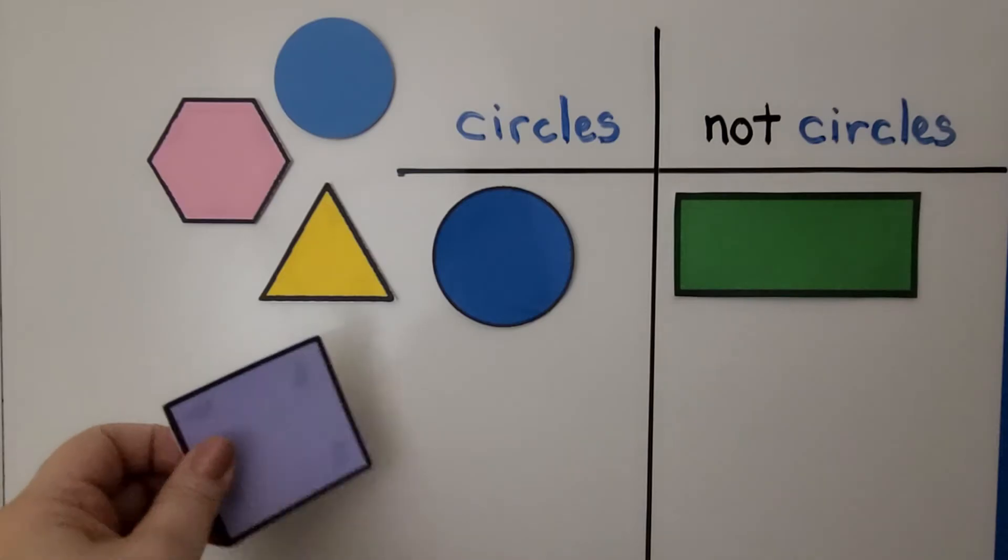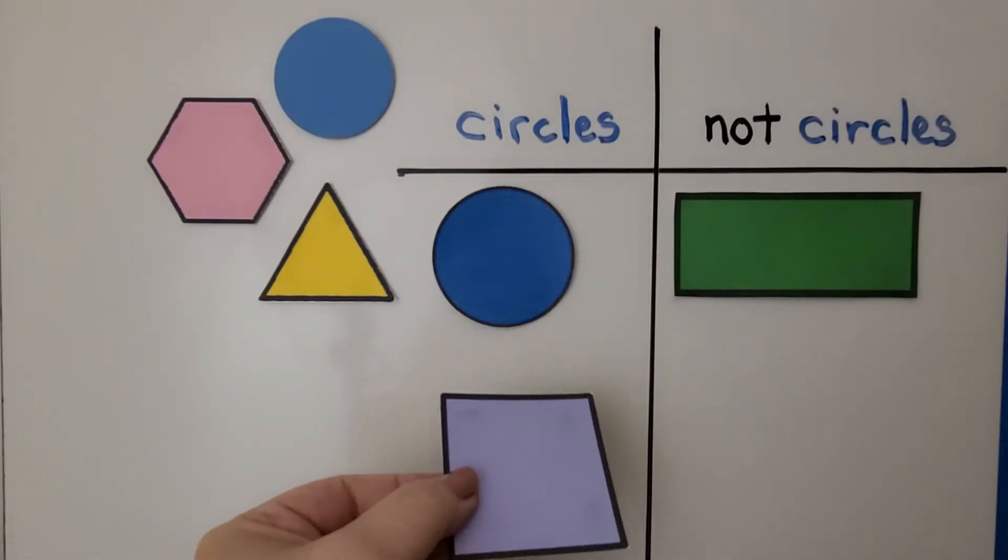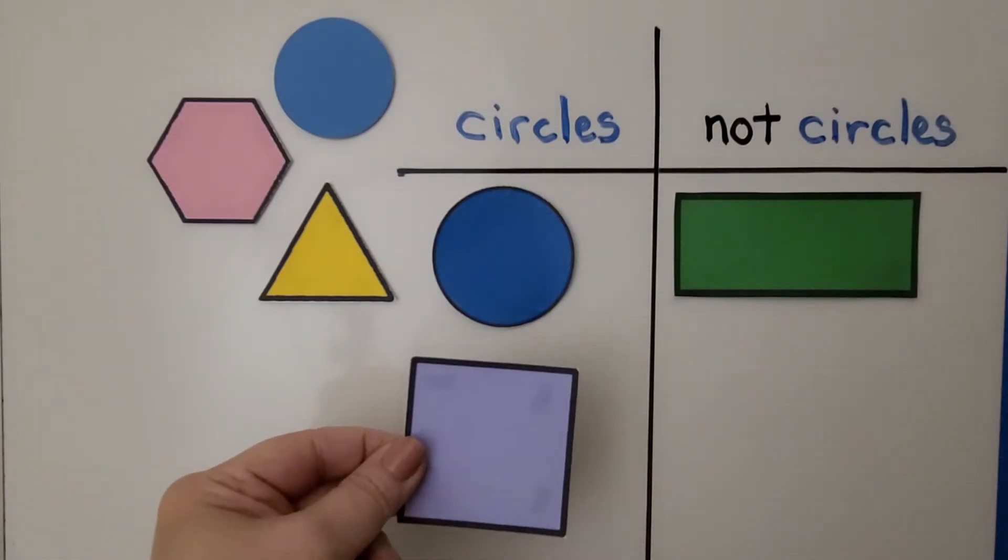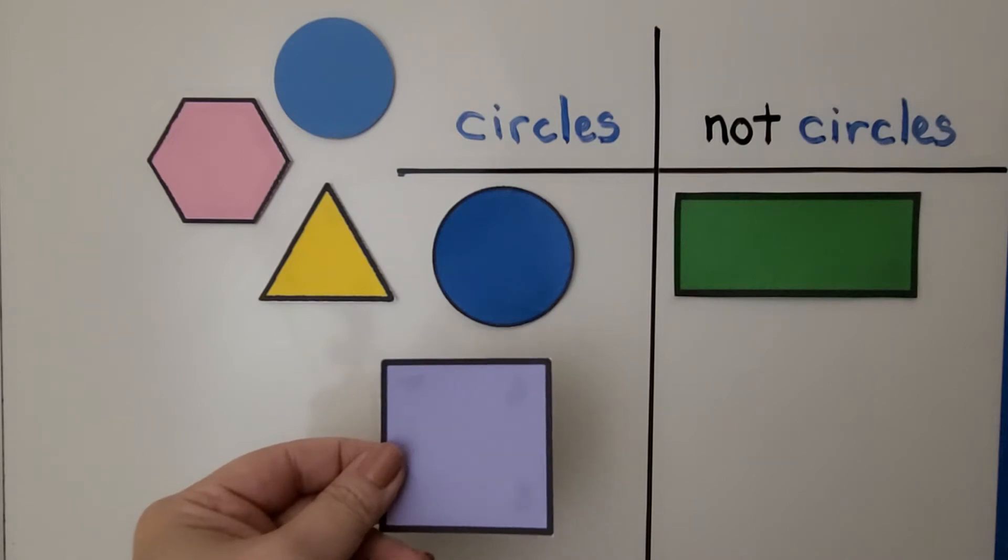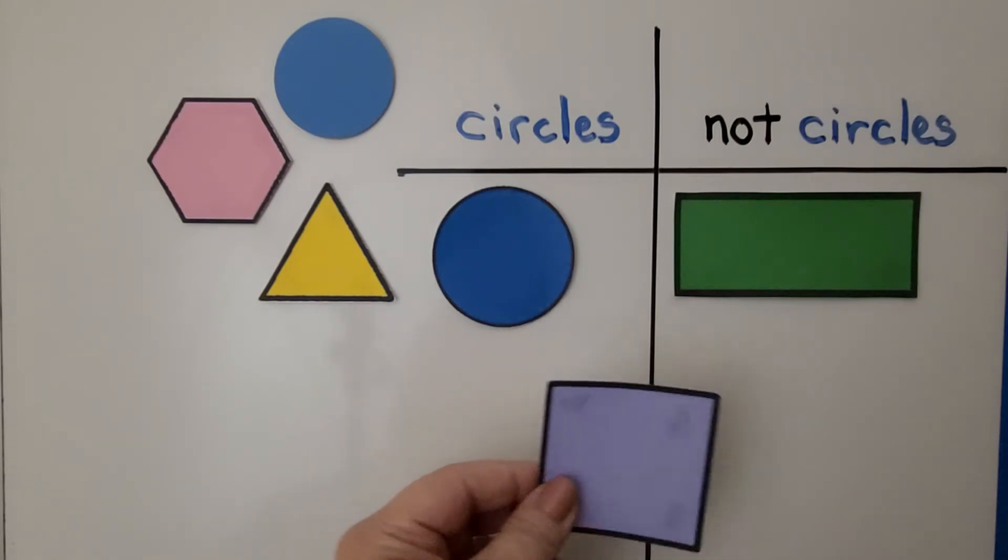Do you think this is a circle or not circle? This is not a circle. This is a square.